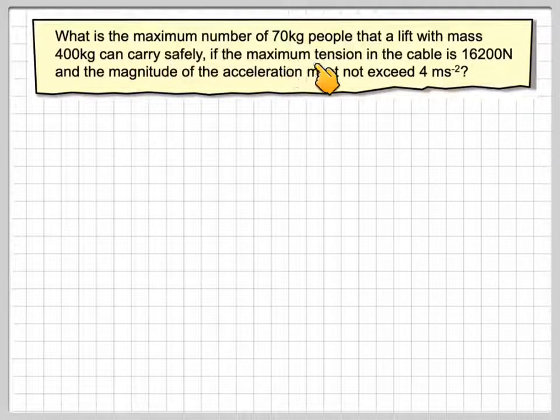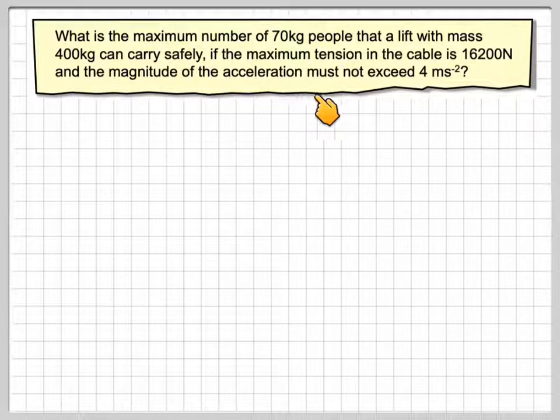What is the maximum number of 70 kilogram people that a lift with a mass of 400 kilograms can carry safely if the maximum tension in the cable is 16,200 newtons and the magnitude of the acceleration must not exceed 4 meters per second squared?